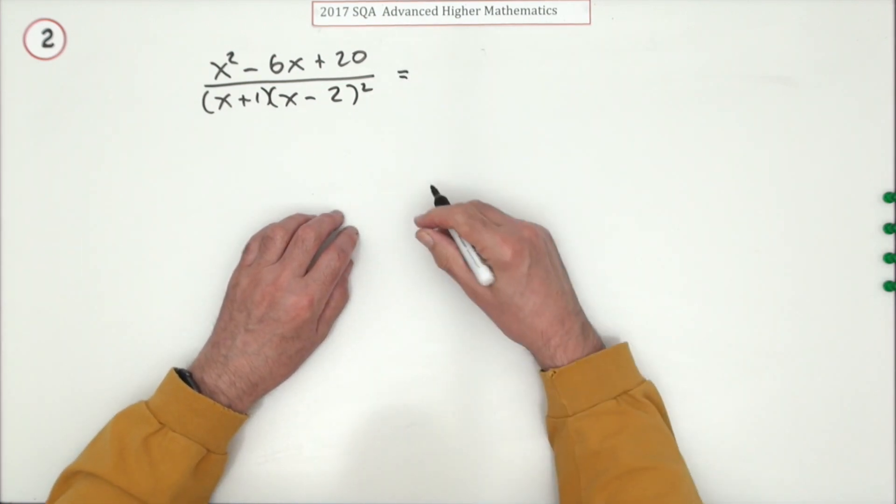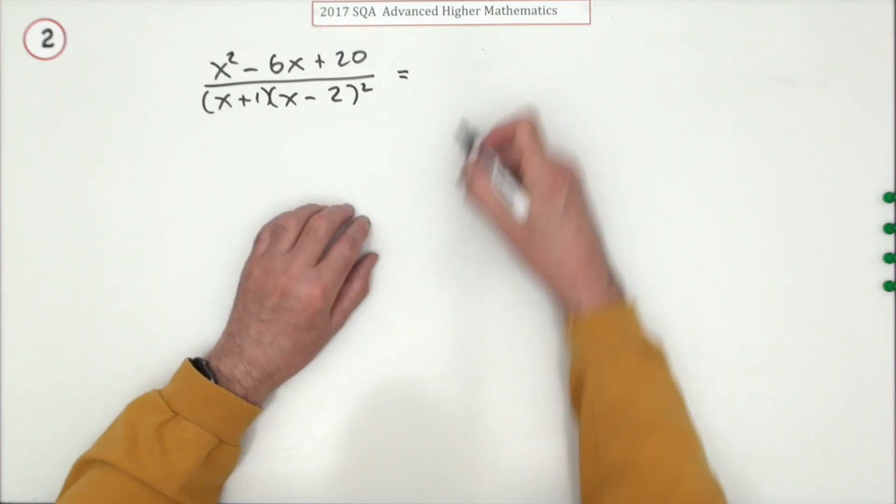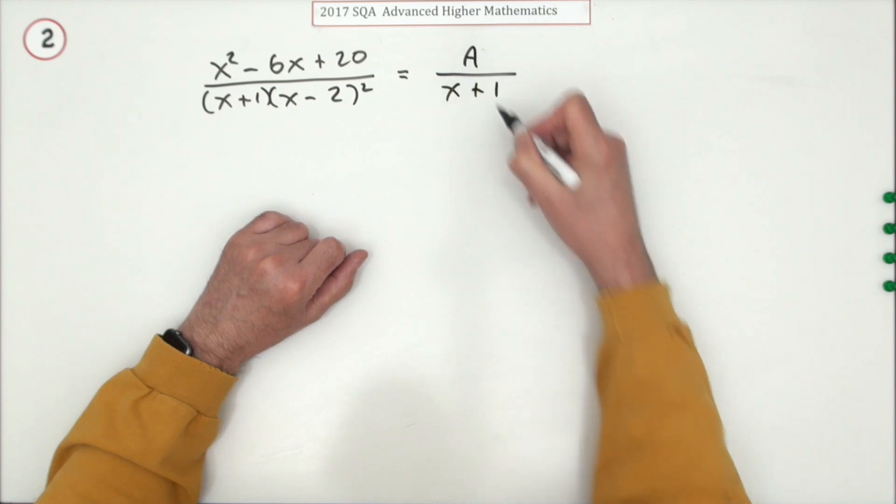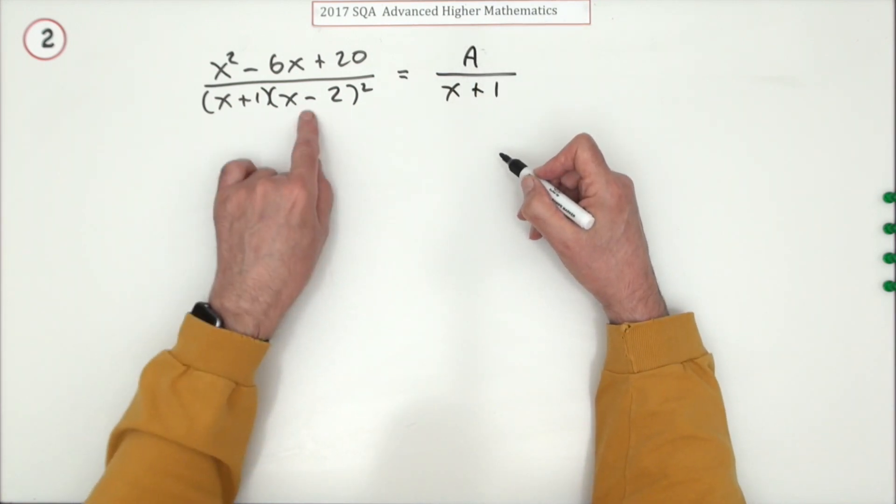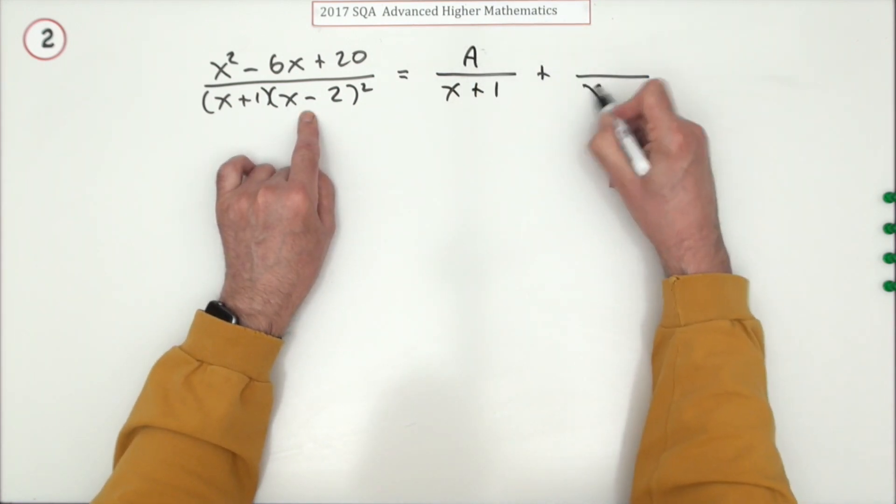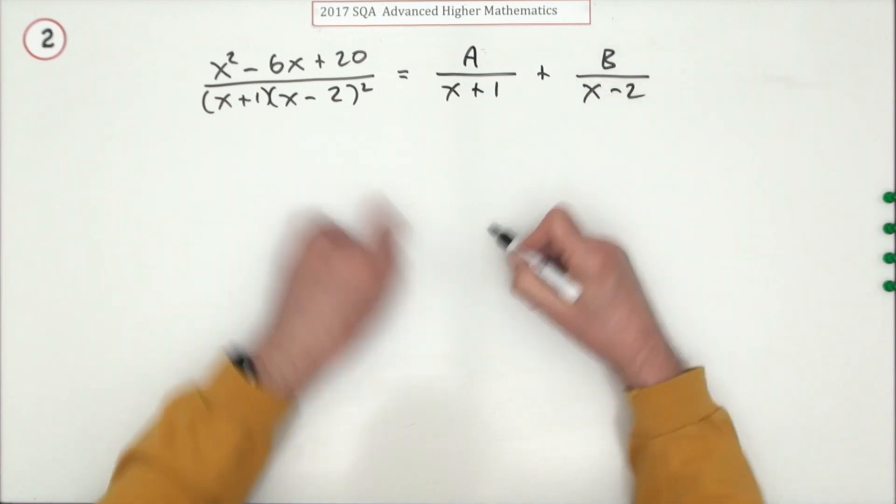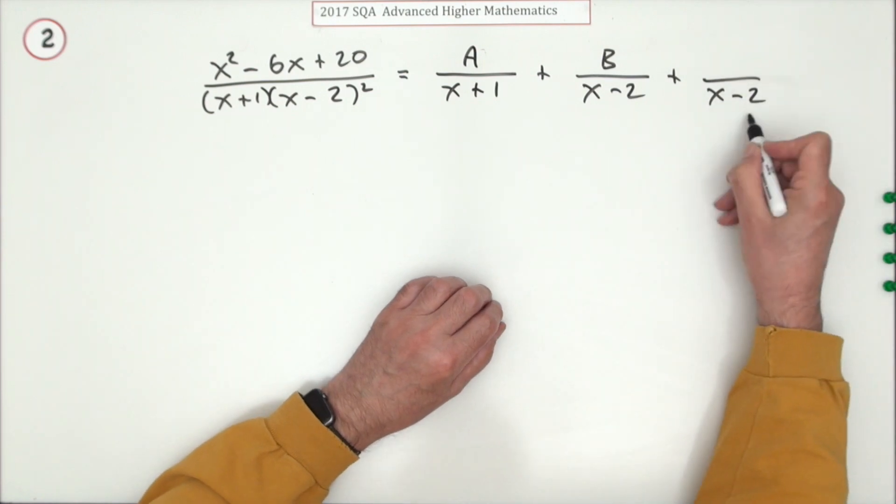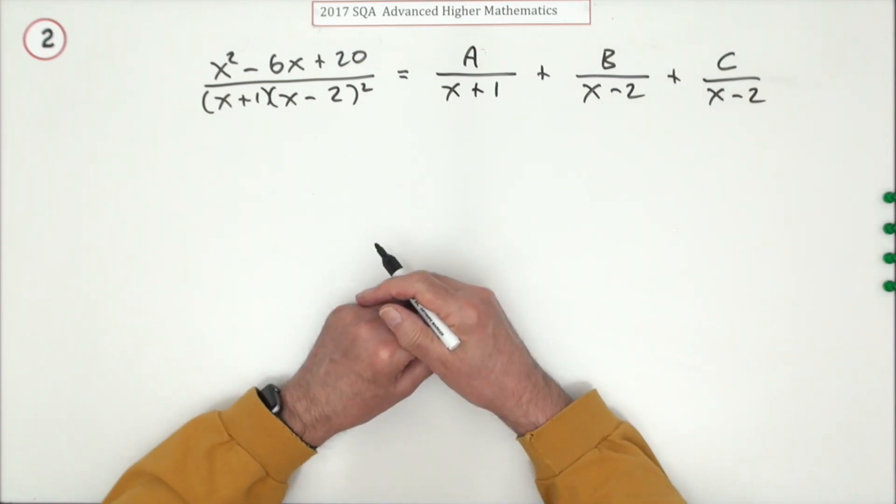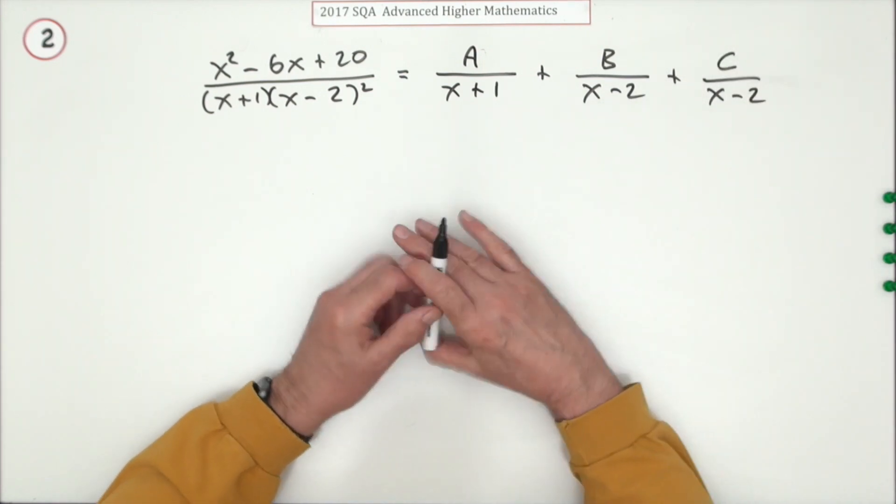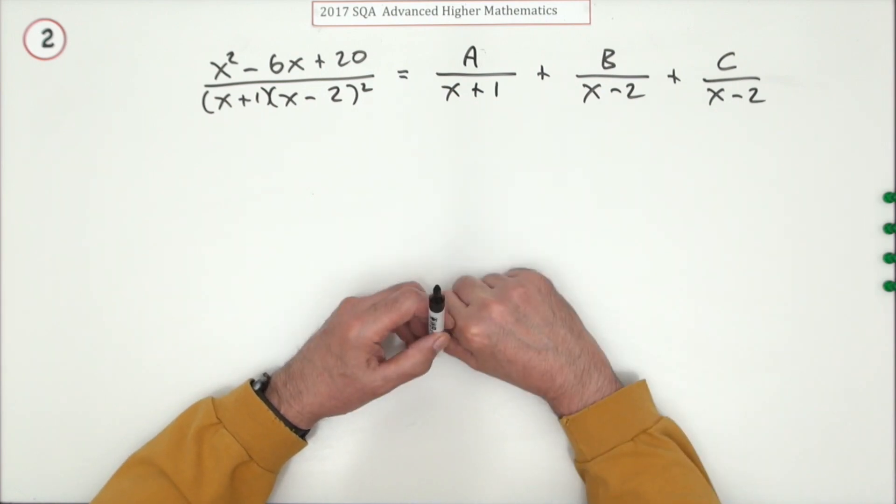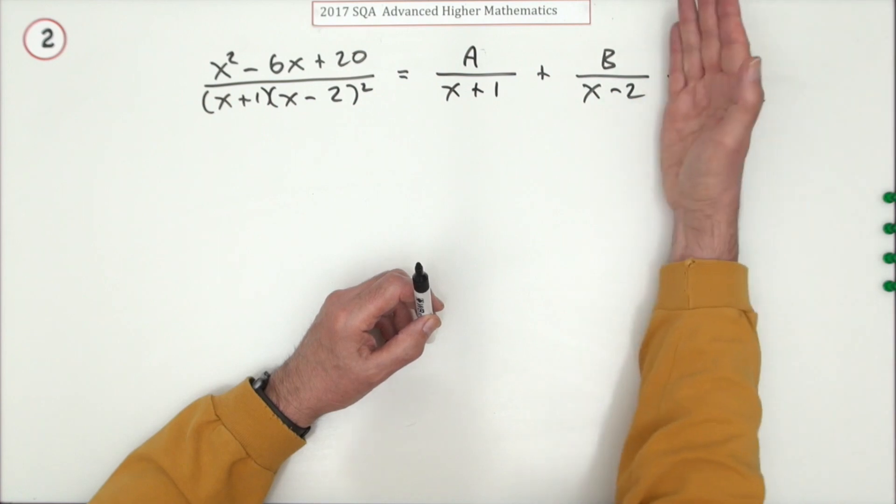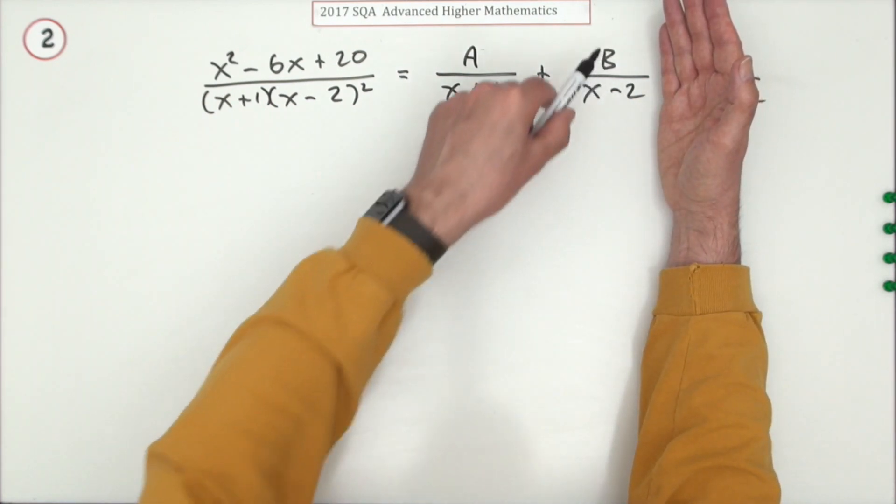That being the case, you can just go ahead then. Nice little linear factors - x plus one being linear just requires one constant on top. Then x minus two, same again, a linear factor, a constant on top. You think, I've just got that denominator again, so why not just put that down one more time, x minus two with a C on top? But if you did that, that would be wrong.